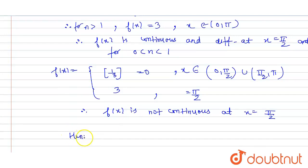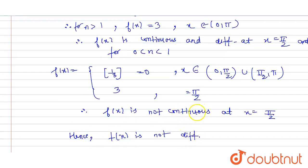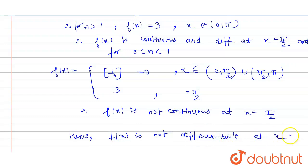Hence f(x) is also not differentiable, because if a function is not continuous at a point, it cannot be differentiable there either. So f(x) is not differentiable at x = π/2, which is the desired answer for the given question.